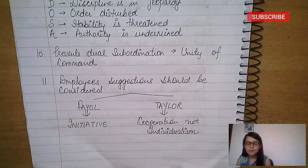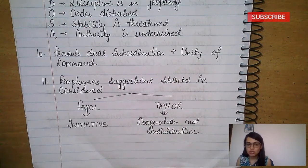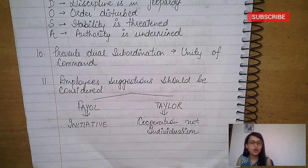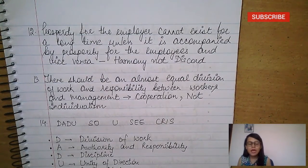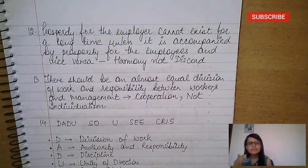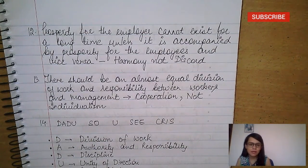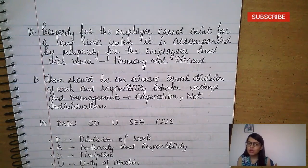Regarding similarities between Fayol and Taylor: Fayol also says that employees' suggestions should be taken — that is in initiative. Taylor also says employees' suggestions should be heard — that is in cooperation not individualism. Now a very common confusion: harmony not discord versus cooperation not individualism. The confusion is valid because cooperation not individualism is an extension of harmony not discord.